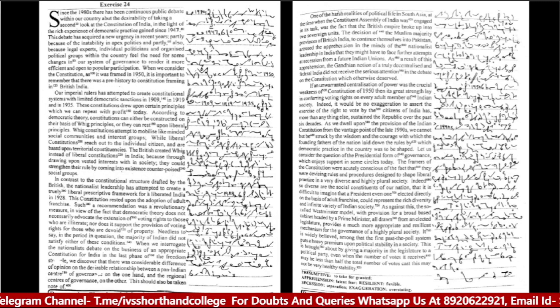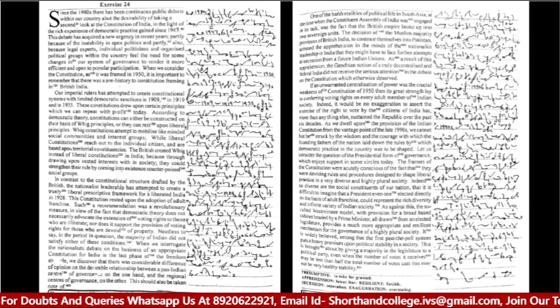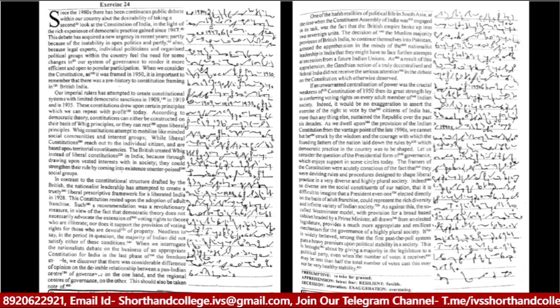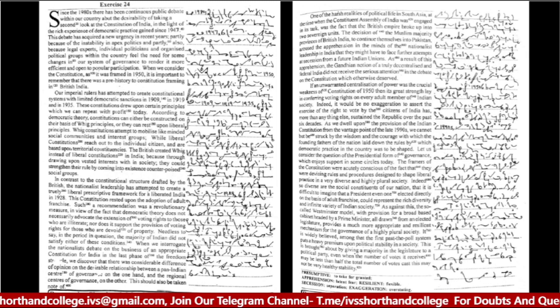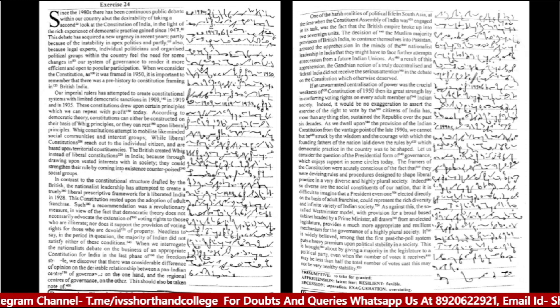When we consider the constitution as it was framed in 1950, it is important to remember that there was a prehistory to constitution framing in British India. Our imperial rulers had attempted to create constitutional systems with limited democratic sanctions in 1909, in 1919 and in 1935. These constitutions drew upon certain principles which we can repeat with profit today.